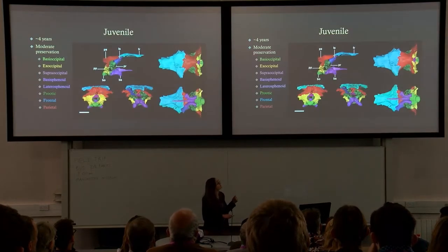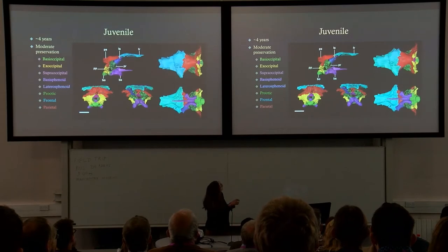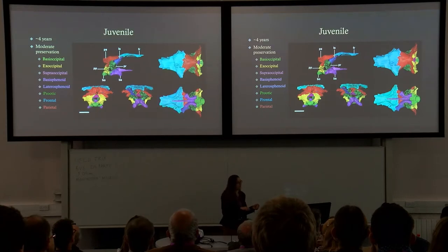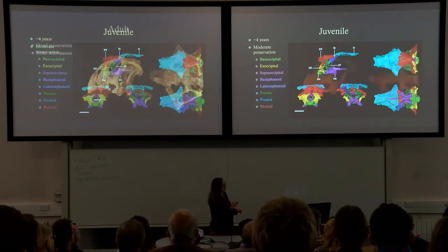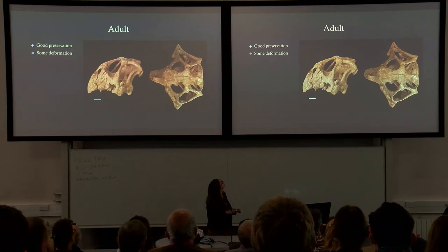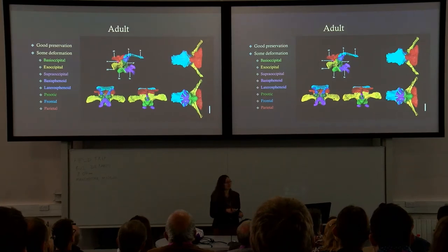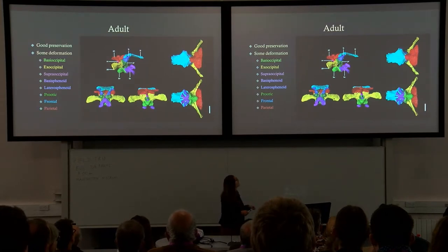The yellow exoccipitals or paroccipital processes of the juvenile are incomplete, as is the parietal, and there was some dorsal-ventral compression. It was difficult to segment because it was very well fused and deformation had pretty much obliterated the sutural boundaries. Finally, the adult had great preservation with only a little deformation, and although well fused, the sutural boundaries were quite easy to see. There is clearly a lot of difference between the hatchling and the adult specimen.